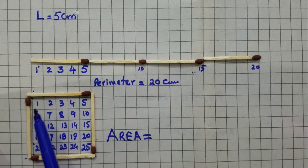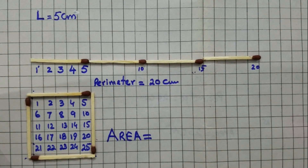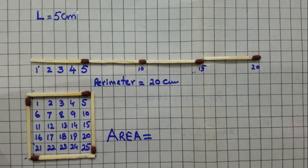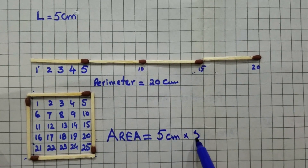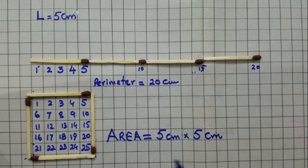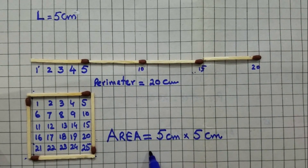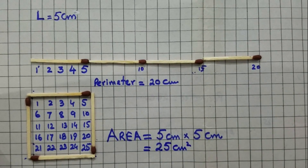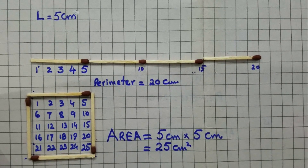Now we find the area of a square. This is a square — five centimeter, five, five, and five centimeter. We calculate the area of square as 5 cm multiplied by 5 cm. We get 25 cm square. Now we observe that these are 25 squares.